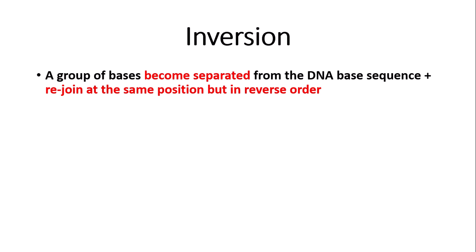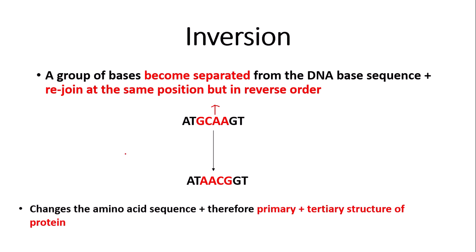The next type of mutation is inversion. Inversion is when a group of bases become separated from the DNA base sequence and rejoin at the same position but in reverse order. For example, here we have a sequence ATG CAAGT, and this group of bases CAA is separated. They then rejoin the DNA base sequence at the same position but in reverse order — so instead of GCAA we have AACG. This leads to changes in the amino acid sequence as there are different codons coding for different amino acids, and therefore the primary and tertiary structure of the protein is affected, possibly making it non-functional.